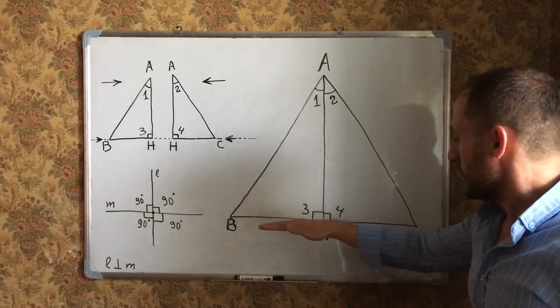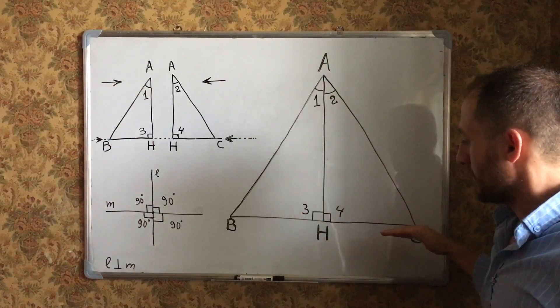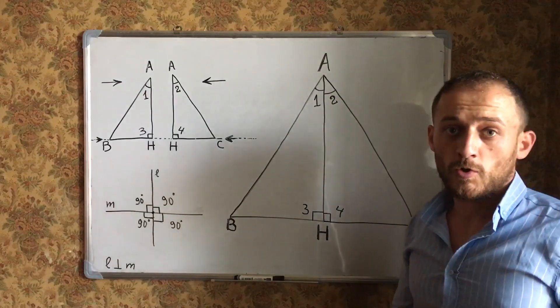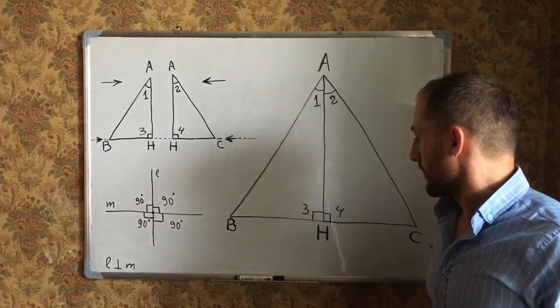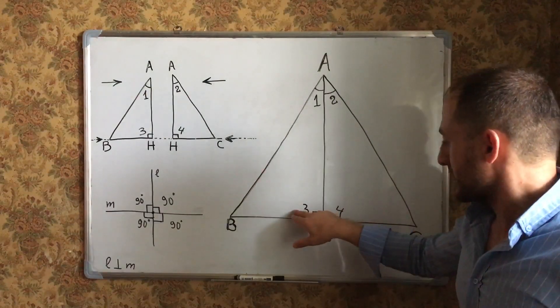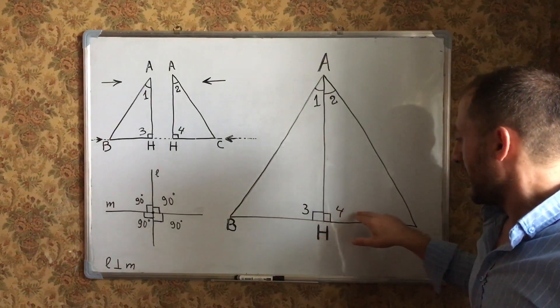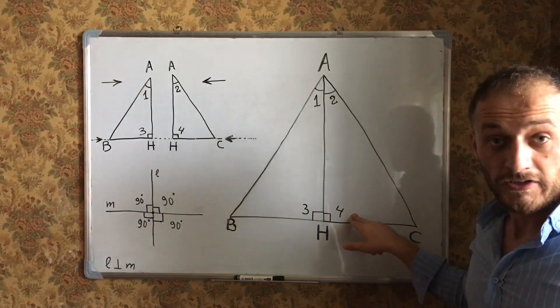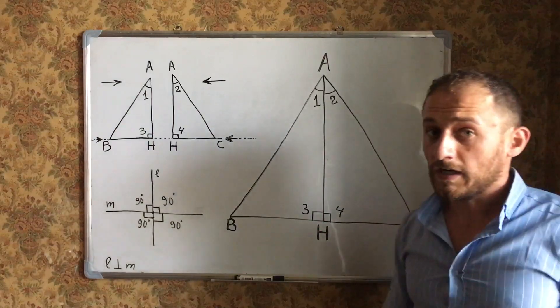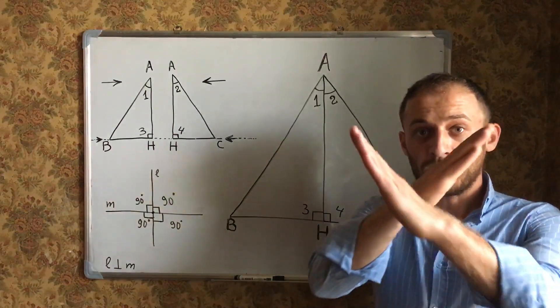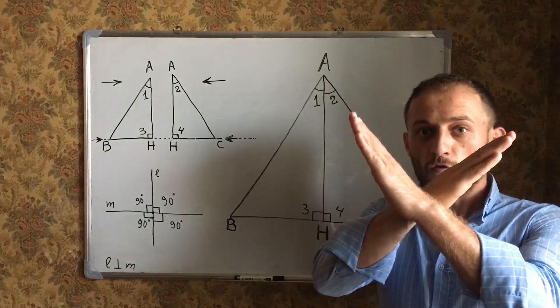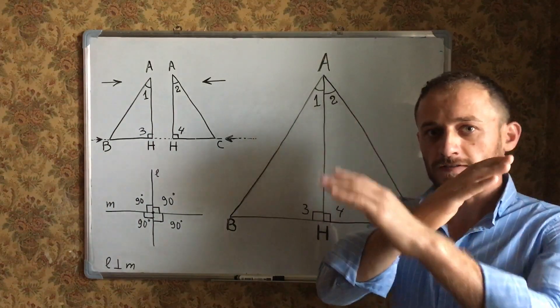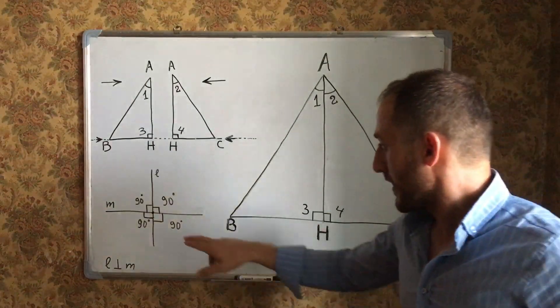AH is perpendicular to BC by the definition of an altitude. Angle 3 and angle 4 are right angles. We know two perpendicular lines form four right angles.